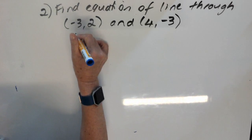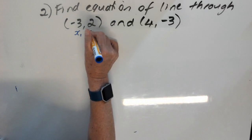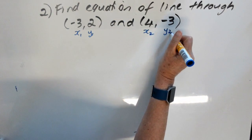So first, we label our points: x1, y1, x2, y2.